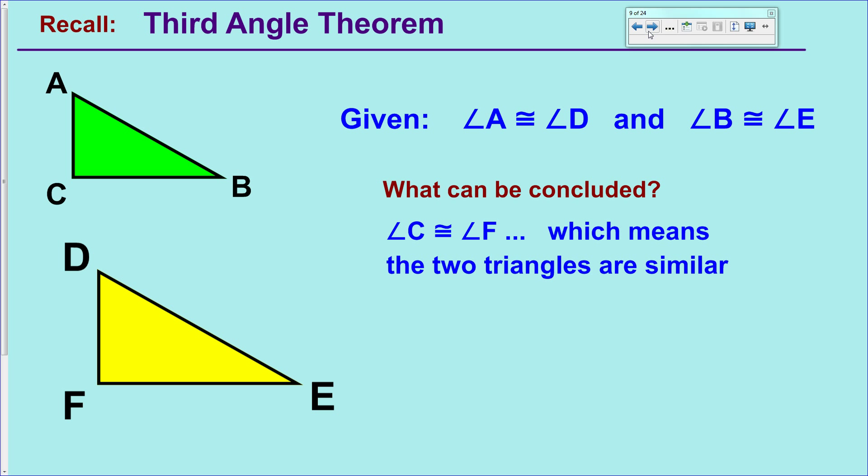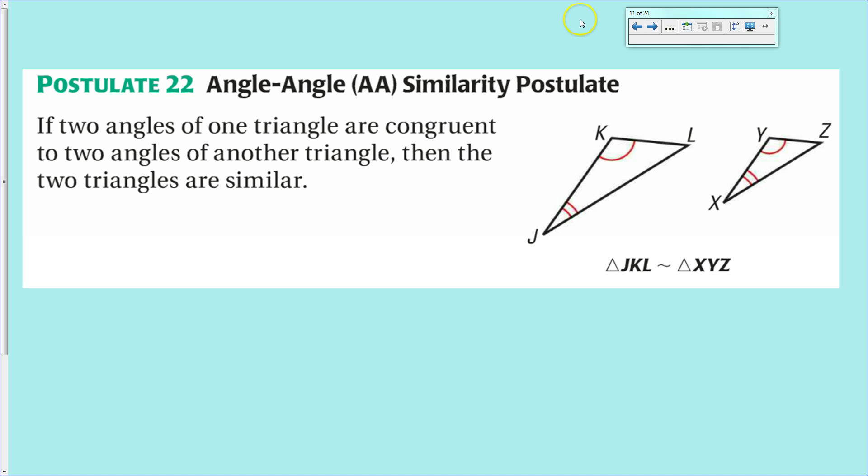And the Third Angle Theorem said, well, if I've got two of them that are congruent, well, all interior angles of triangles must add up to be 180, so therefore that third angle that's unknown must also be congruent to each other, because the other two are. So that means that if we just have two angles, that automatically gives us the third. So if we have two angles, we automatically get that third, and thus we have the similarity. So we only need to state that two angles are congruent, not three.